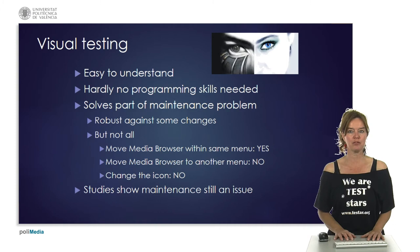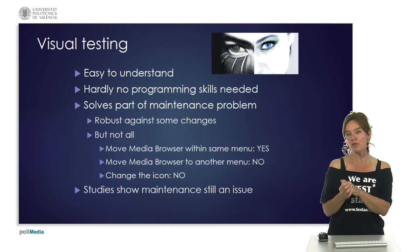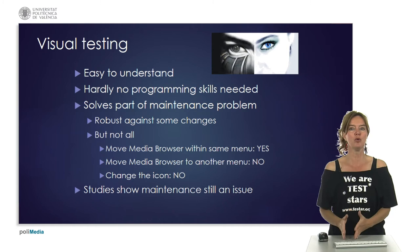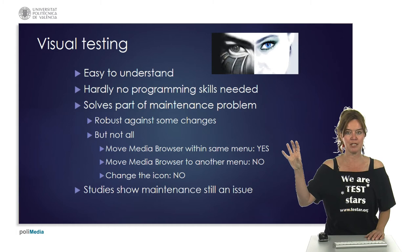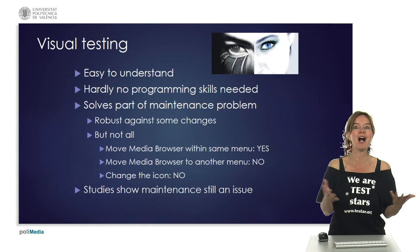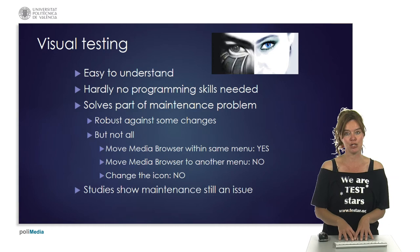However, visual testing is not robust against all changes. Imagine testing Microsoft Word and going to the Media Browser — if someone moves it within the same menu, the tool can still find the image and won't break. But if the Media Browser is moved to another menu that isn't visible in a specific state, or if the icon of the Media Browser is changed, the script will break. Studies have shown that visual testing tools, although they solve part of the maintenance problem, still have a script maintenance issue.